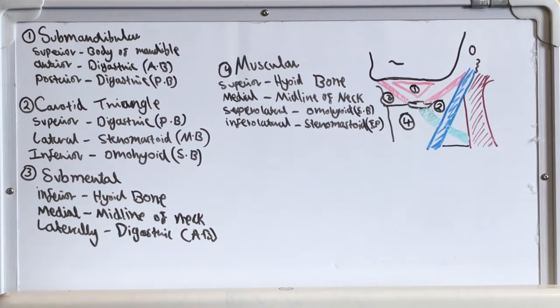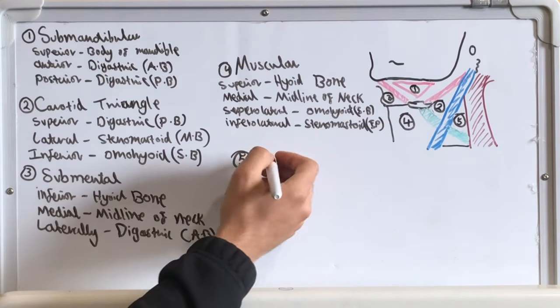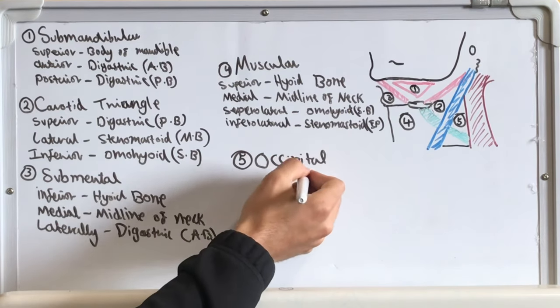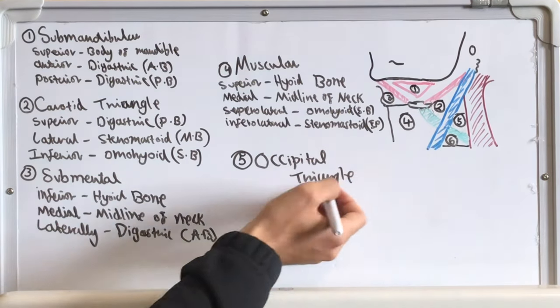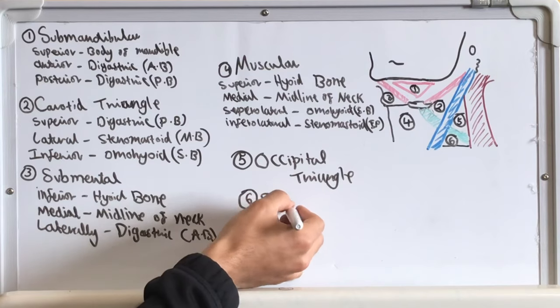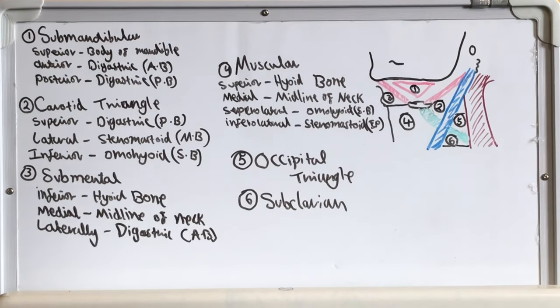Also from this diagram we can work out the boundaries of the posterior triangles of the neck, number five being the occipital triangle and number six being the subclavian triangle.